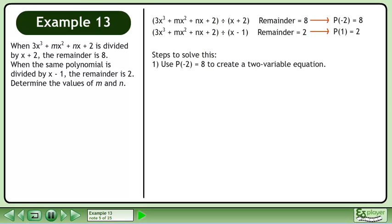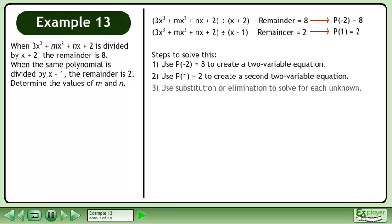Let's outline the steps required to solve this. First, use p at negative 2 equals 8 to create a two-variable equation. Next, use p at 1 equals 2 to create a second two-variable equation. And finally, use substitution or elimination to solve for each unknown.